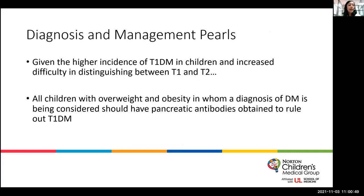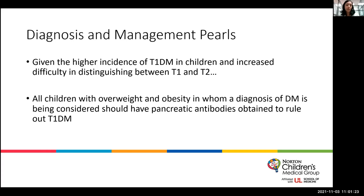Given the higher incidence of type 1 diabetes in children and the increased difficulty in distinguishing between types, all children with overweight and obesity in whom a diagnosis of diabetes mellitus is being considered — or has been made — should have pancreatic antibodies obtained to rule out type 1 diabetes, because the implications for treatment are significant, including the decision of whether insulin therapy needs to be started or whether oral antihyperglycemic agents can be initiated.